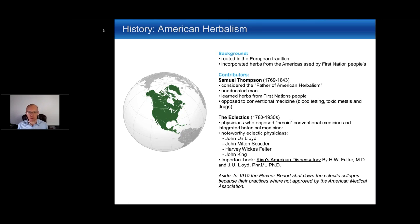One of the first major contributors is Samuel Thompson, considered the father of American herbalism. He was not trained as a doctor or pharmacist — he was uneducated and first learned about herbs by speaking with First Nations people. At the time, conventional medicine was dangerous, involving bloodletting and toxic substances like mercury and antimony. George Washington is believed to have died from bloodletting.